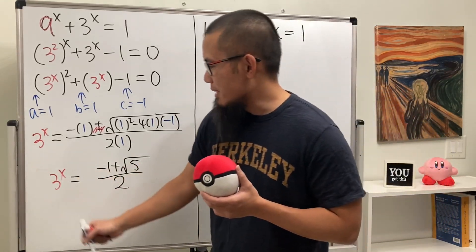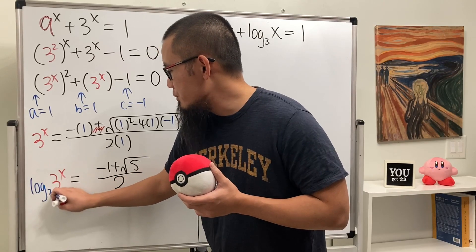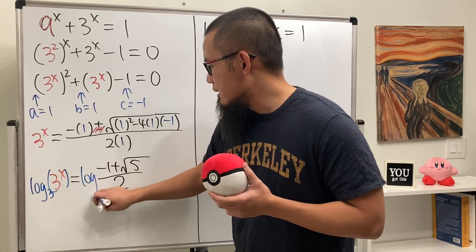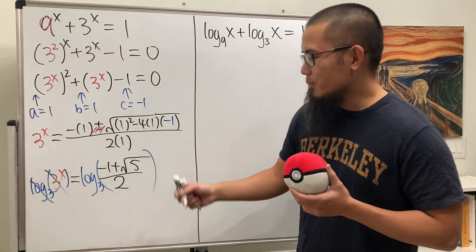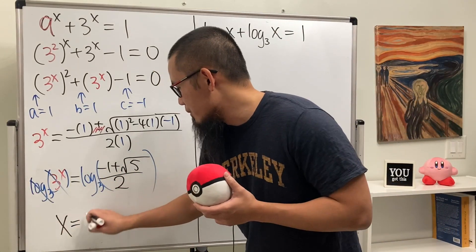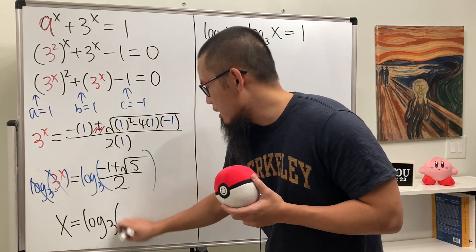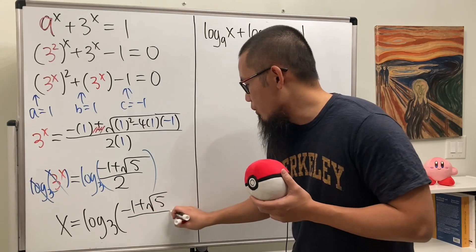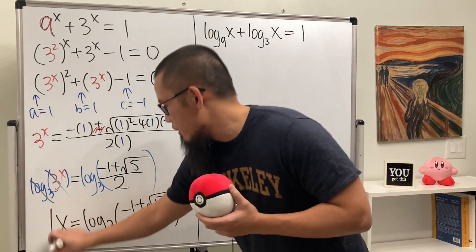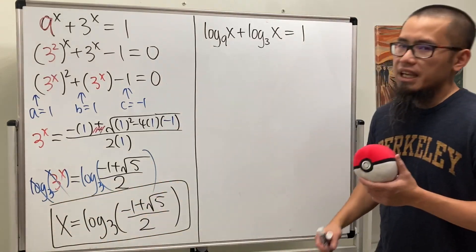To get the x by itself we just take log base 3 on both sides, and this and that will cancel very nicely. So we have x being equal to log base 3 of that, which is negative 1 plus square root of 5, all over 2.